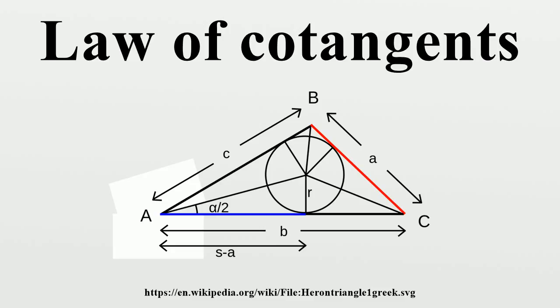Using the usual notations for a triangle, where a, b, c are the lengths of the three sides, A, B, C are the vertices opposite those three respective sides.